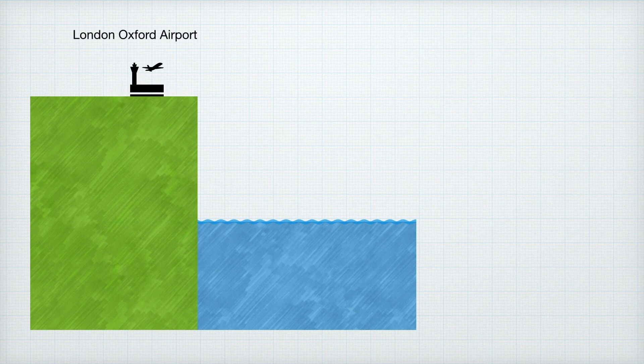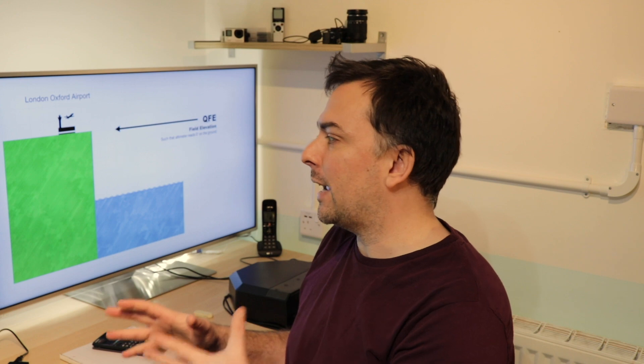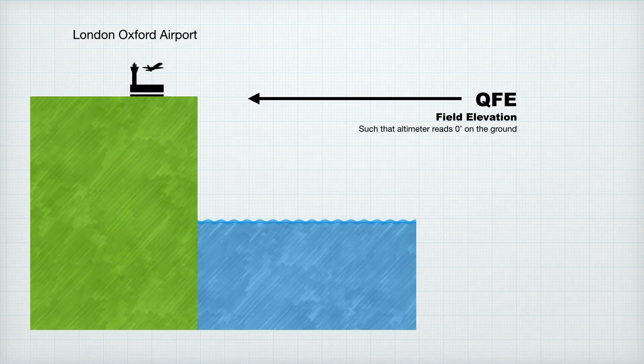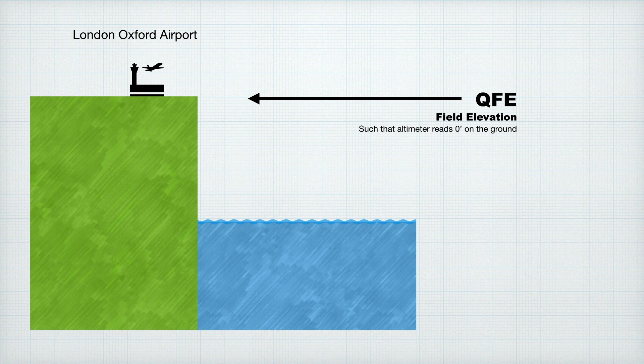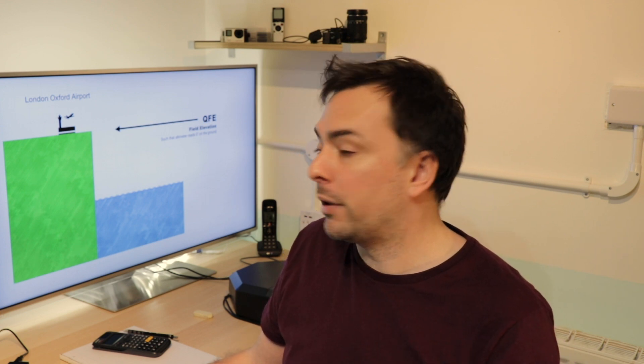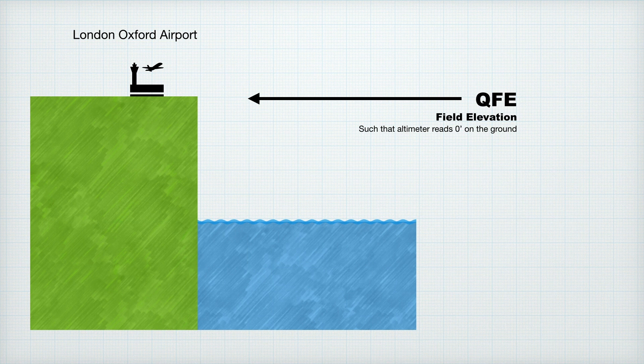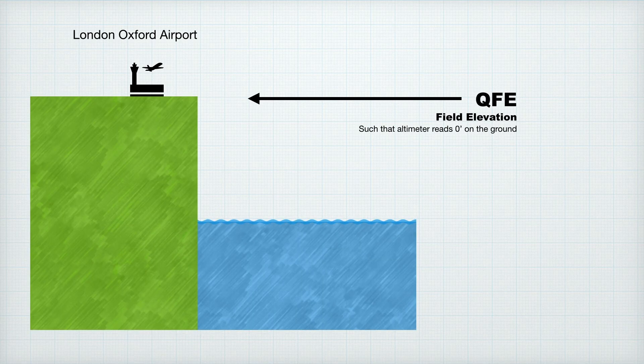In the world of altimetry, we have a few different reference settings that we can use. Here's an airfield — let's pretend it's Oxford. First, let's look at QFE. Think of QFE as field elevation. It's the altimeter pressure setting that will read zero feet when you are on the ground at an airfield. So when we're on the ground in Oxford with QFE set on our altimeter's window, our altimeter will read more or less zero feet. That's fine locally, but not good when you start travelling away from the aerodrome, because the elevation of the ground beneath you is changing all the time.